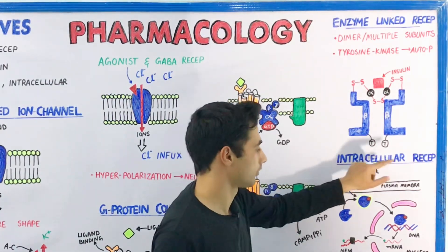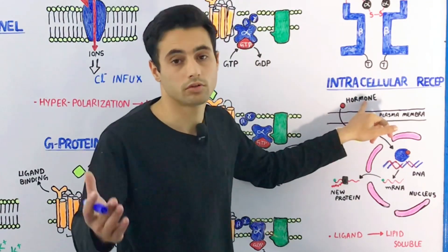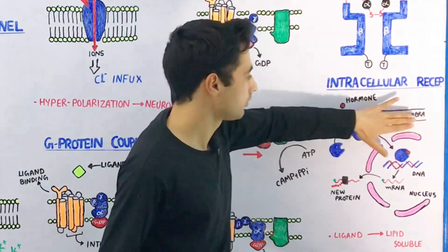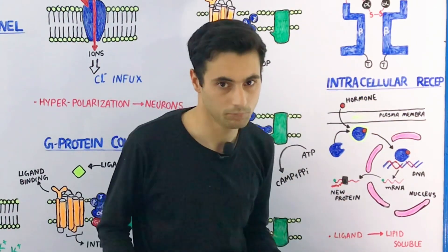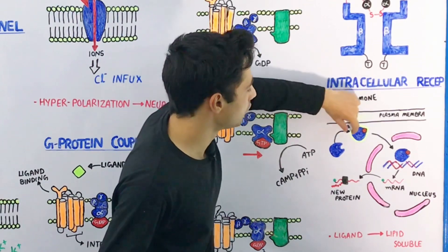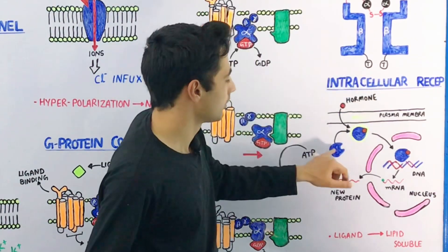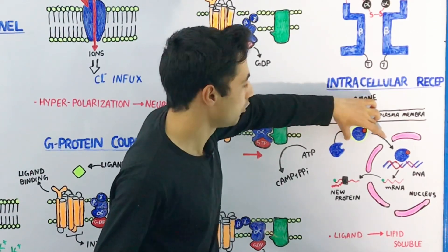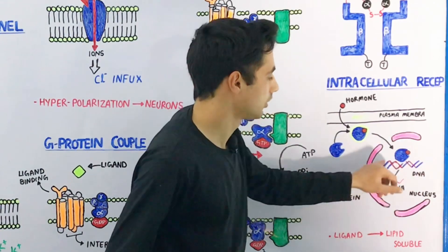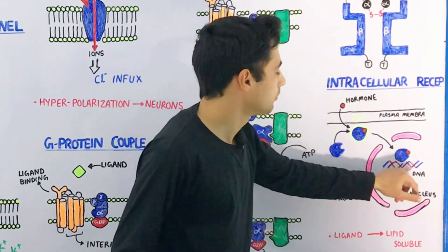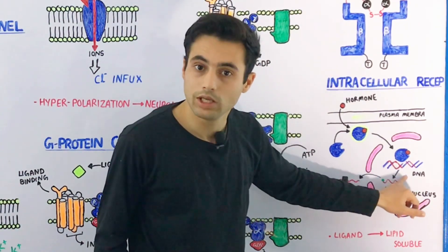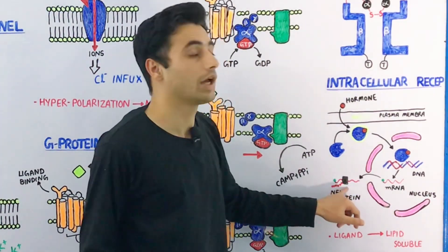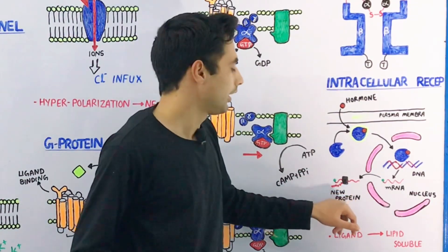The intracellular receptors, as the name suggests, are receptors found inside the cell. Because hormones and drugs acting on these receptors are lipophilic, they have no problem crossing the plasma membrane, which is also lipid in nature. So the hormones or drugs pass through the plasma membrane and bind with receptors found in the cytoplasm. This whole complex moves into the nucleus, where it binds with DNA at transcription factors, generating messenger RNA through the transcription process.